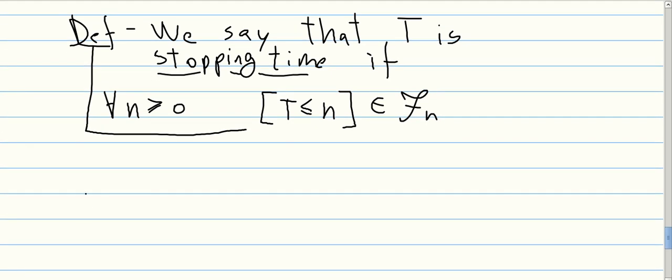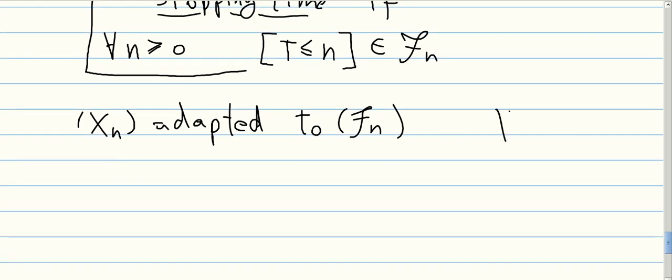Okay, so let's look at some examples of stopping times. Imagine that you have a process XN which is adapted to FN. So we have a process adapted to a filtration. What does that mean? Simply that XN belongs to FN for every N.